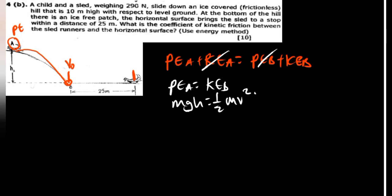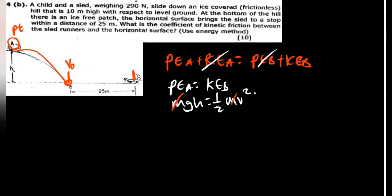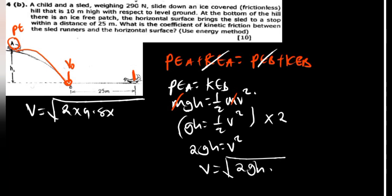We want to find the velocity at B. We cancel the mass from both sides, giving gh equals half v squared. Multiplying both sides by 2: 2gh equals v squared, so v equals the square root of 2gh. Plugging in values: v equals the square root of 2 times 9.8 times 10, which gives the square root of 196, equal to 14 meters per second. So the velocity at B is 14 m/s.